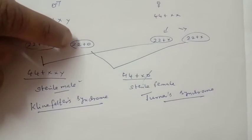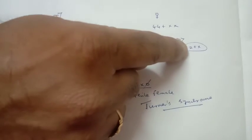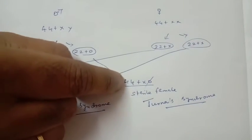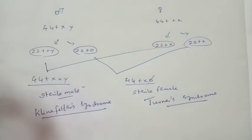Then see here, a 22 plus 0 male gamete fertilizes with an egg with 22 plus X, leading to the formation of Turner syndrome with 45 chromosomes, sterile female.